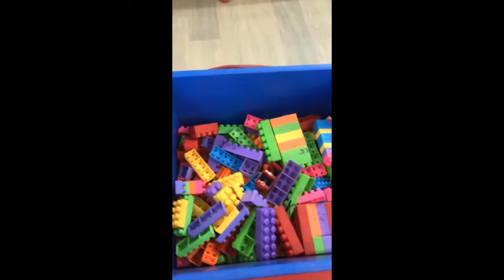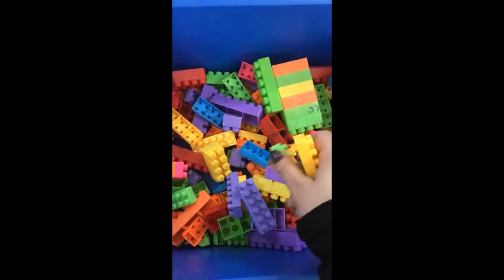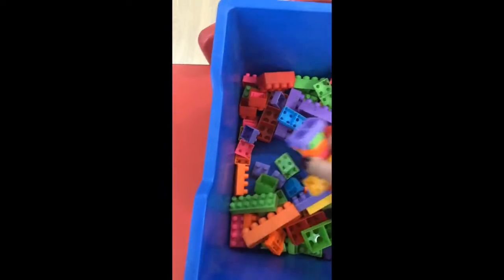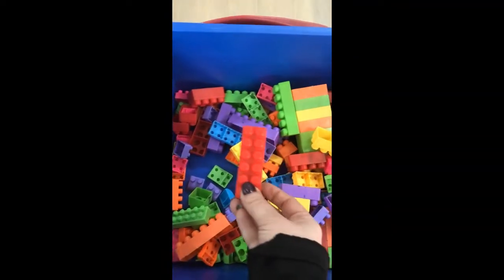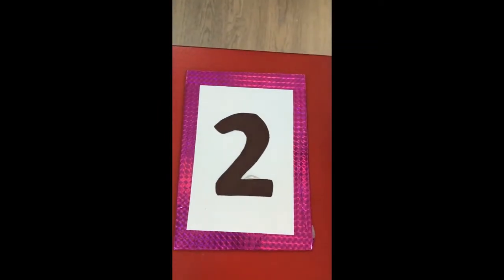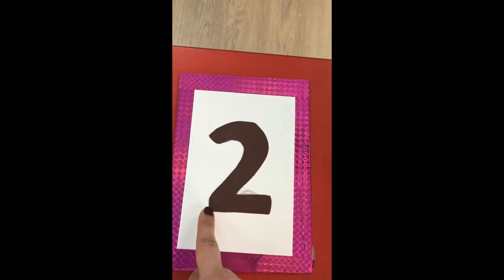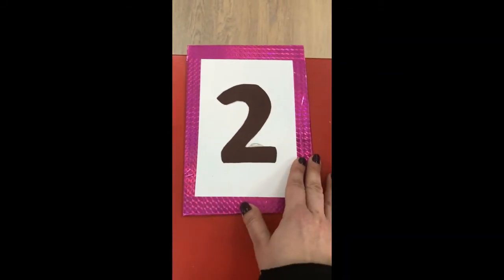Blocks time. Alright. Get some blocks. I will take the red one. Okay, what do I need to do? What number is this again? Two. Round. Slide. Across. Number two.